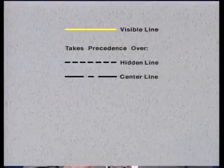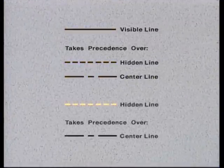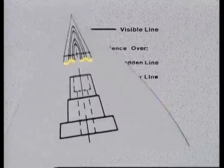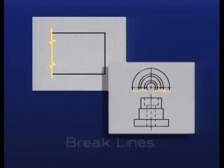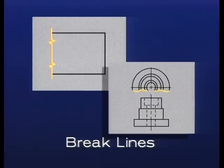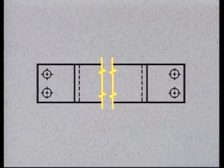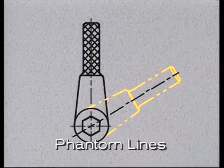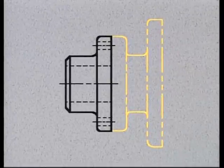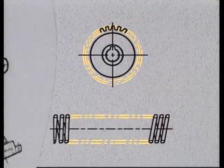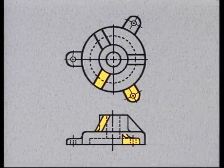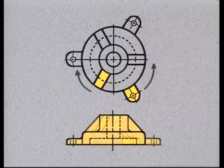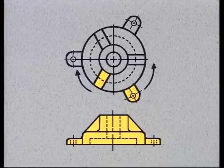Let's review these drafting conventions. Conventions are accepted methods of simplifying the representation of certain part features. Visible lines take precedence over hidden lines and center lines; hidden lines take precedence over center lines. Break lines are used to indicate where a view has been broken off, and the style of the break line reflects the size of the break. Break lines are also used to indicate that a portion of a long, uniform part has been removed to save space. Phantom lines represent the alternate position of a moving part, the position of an adjacent part, and repetitive detail. When true orthographic projection of features such as webs, lugs, ribs, and spokes would result in foreshortening, they are rotated into alignment, and the resulting view shows their true shape and proportion.